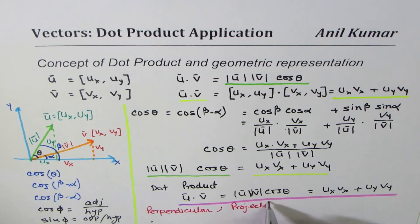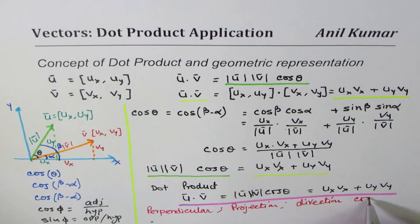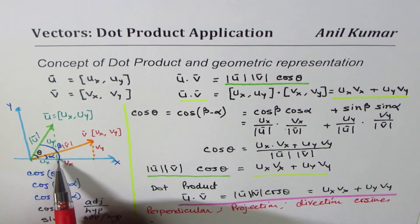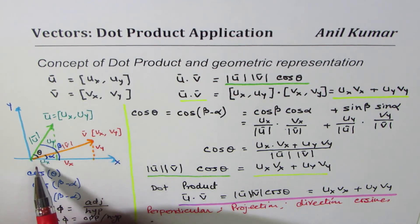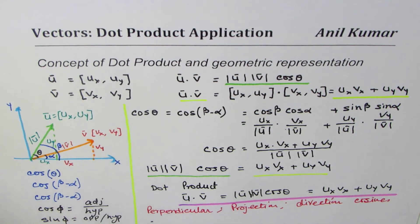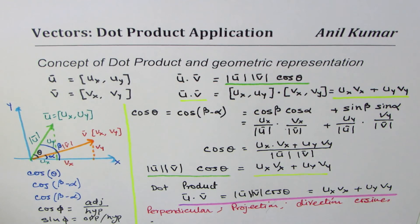We'll also look into direction cosines, since angles alpha and beta define the direction of the vector with the x-axis. These are very important topics we'll explore in this set of videos. I hope this gives you a good introduction to dot product. We'll now move into the applications. I'm Alil Kumar — please share my videos, feel free to post questions, and if you like, put likes. Thank you and all the best.